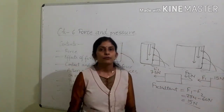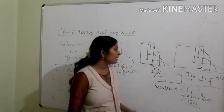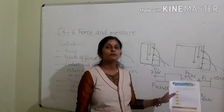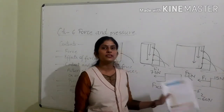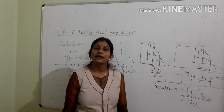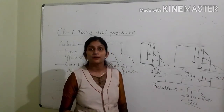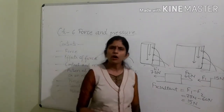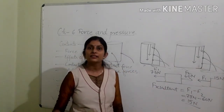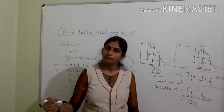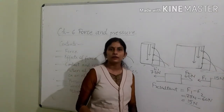To summarize: if an object experiences two unequal forces from opposite directions, calculate the difference between those forces to find the resultant. If an object experiences unequal or equal forces in the same direction, calculate the sum of those forces to find the net or resultant force acting on the object.